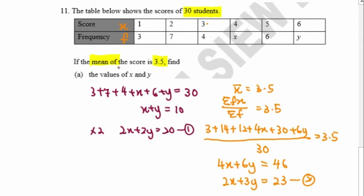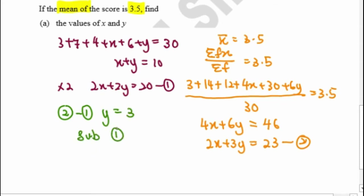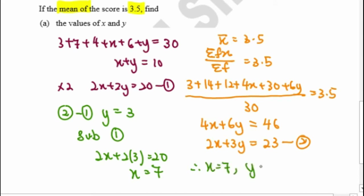To find the two unknowns we use two simultaneous equations. Taking equation 2 minus equation 1: 2x minus 2x equals 0, 3y minus 2y equals y, and 23 minus 20 equals 3, so y equals 3. Substituting back into equation 1, x equals 7. Therefore x equals 7 and y equals 3.